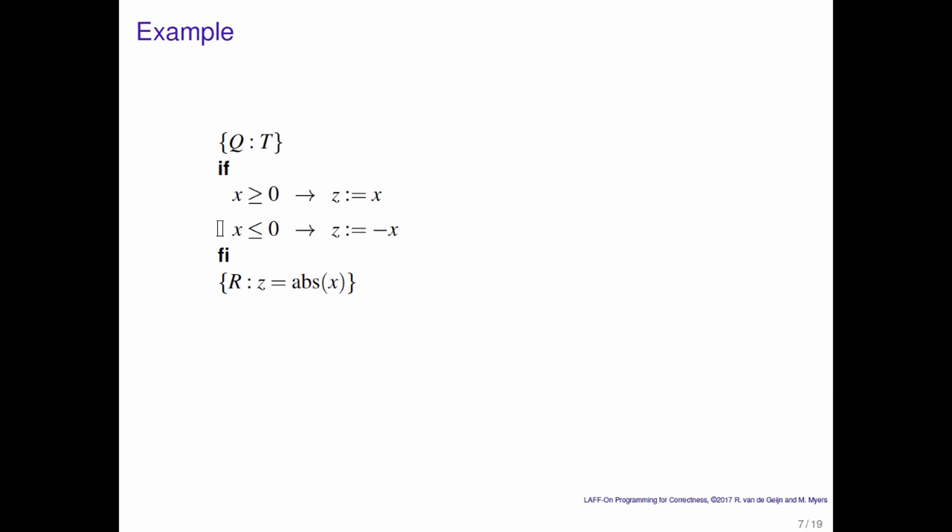And one thing that we notice is that both guards might be true at the same time, because if x is equal to 0, then both are true. And therefore we don't know which of the two guarded commands actually is executed. But what we do know is that we still end up with z being the absolute value of x, because if x is 0, then whether you set z equal to x or minus x doesn't matter. Either way it ends up being equal to 0.